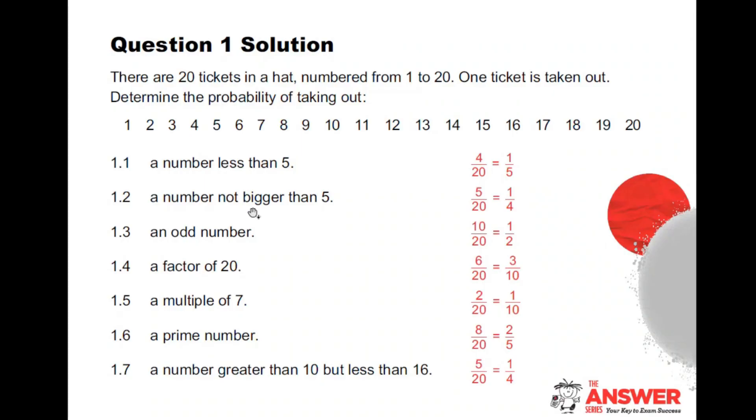We always need to simplify the fractions. If it's a number not bigger than five, these two are not the same. Less than five means I can't include the five. Not bigger than five means I exclude from six onwards. So the first one is four out of 20, the second one is five out of 20. Then odd numbers, factors of 20, multiples of seven, prime numbers. Remembering, of course, which they don't ever remember, that one is not prime. And then a number greater than 10 but less than 16.